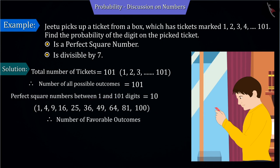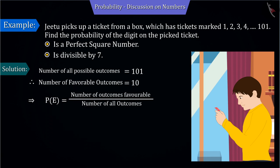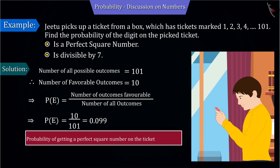That is, the number of results favorable to the event is 10. Let's substitute the values of the total possible outcomes and the number of results favorable to the event in the probability formula. On solving, we get 0.099. Therefore, the probability of having a perfect square number is 0.099.